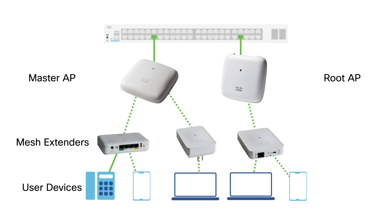In a wireless mesh deployment, the wired APs that aren't promoted to master APs are called Root APs. They play an important role when an unexpected or scheduled outage disables the master AP. The Root APs are still master-capable and will elect and promote a new master AP to take over control of the wireless mesh network.